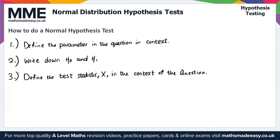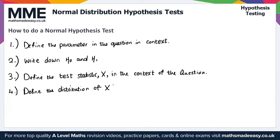Step four: we write down the distribution of X — the test statistic — under the null hypothesis H0.